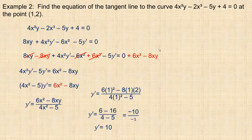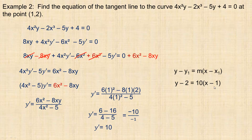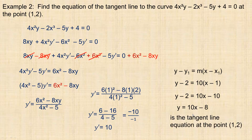The rate of change is 10. Using point-slope form y minus y₁ equals m(x minus x₁), I put 2 for y₁, 1 for x₁, and 10 for the slope. Expanding gives 10x minus 10, then adding 2 to both sides: y equals 10x minus 8. That is the tangent line equation at the point (1, 2).